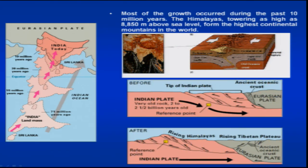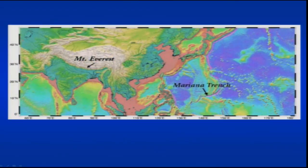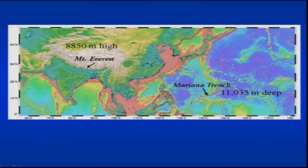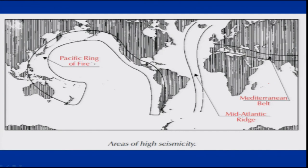Because of plate motions, the ocean floors and continental surfaces were sculpted — the deepest part on earth is 11,035 meters and the highest is Mount Everest at about 8,800 meters. In terms of tectonic boundaries, we have the Ring of Fire, the mid-oceanic ridges running across, and the Mediterranean belt — the Alpine-Himalayan chain. This is the area where all active volcanoes are linked — the Pacific Ring of Fire — and these are the major areas of high seismicity.